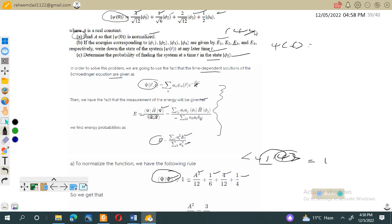We can find its complex conjugate. Taking the complex conjugate, ψ* will be equal to a/√12 φ₁ + 1/√6 φ₂ + 2/√12 φ₃ + 1/2 φ₄.